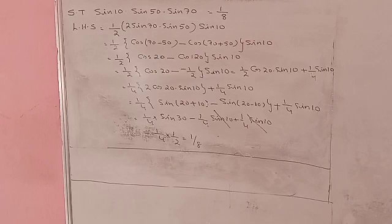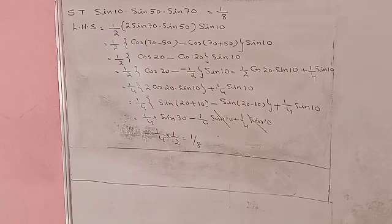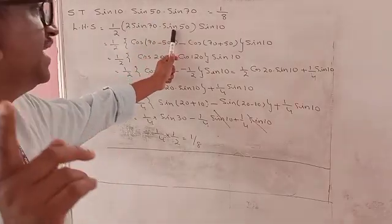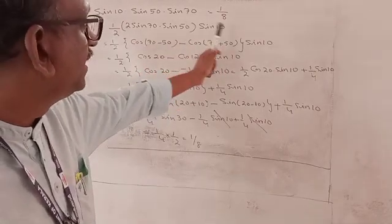Now here we use the direct method of solving this problem. Show that sin 10° · sin 50° · sin 70° = 1/8. We group sin 70° and sin 50° in one bracket, divide by 2 and multiply by 2. Therefore we write 1/2 · (2 sin 70° · sin 50°) · sin 10°. This is of the form 2 sin A sin B. The formula for 2 sin A sin B is cos(A-B) - cos(A+B).